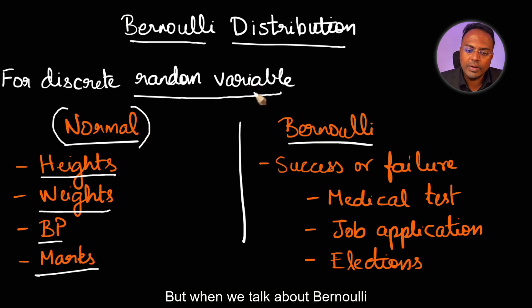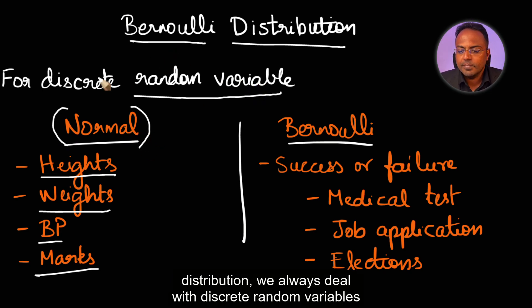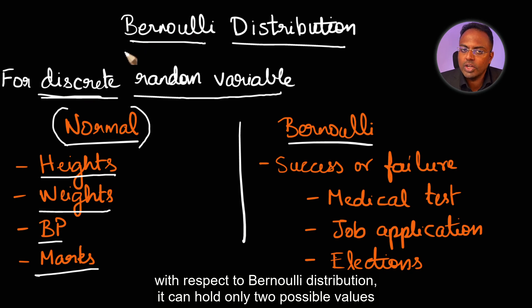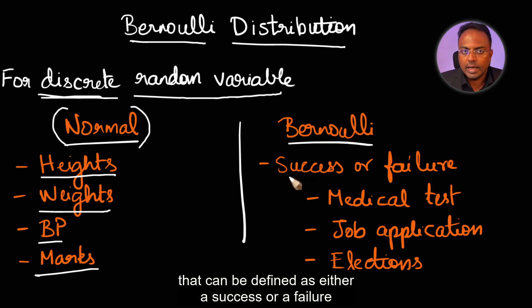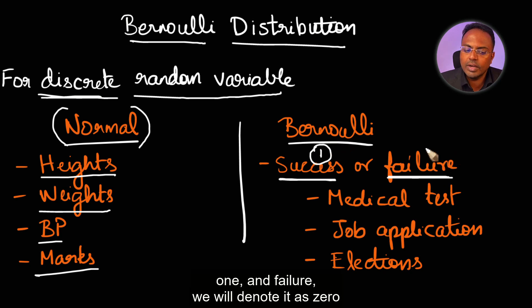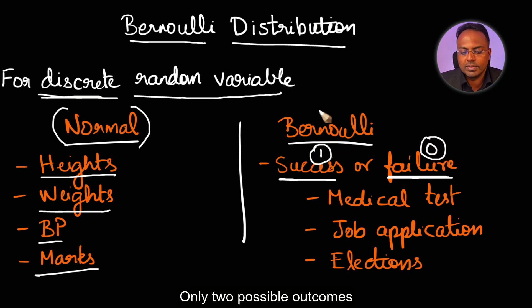But when we talk about Bernoulli distribution, we always deal with discrete random variables. Discrete means categorical in nature. With respect to Bernoulli distribution, it can hold only two possible values, defined as either a success or a failure. Success is typically denoted as 1 and failure as 0 — only two possible outcomes.